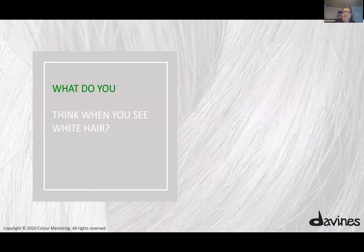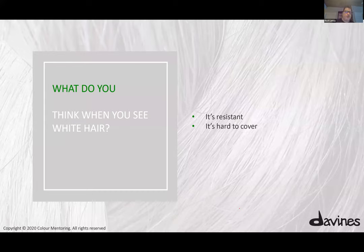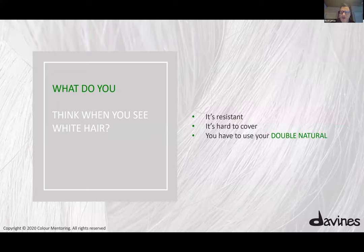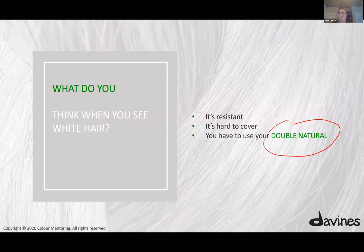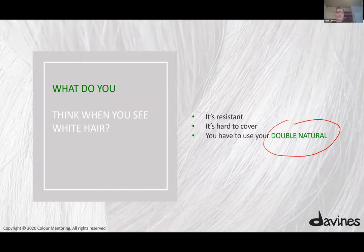The choice of product depends on the connection you're doing with your client to see what she's looking for. What do you think of when you think of white hair? Most hairdressers immediately think: it's resistant, it's hard to cover, and the go-to is double natural. This is often the security blanket because they want to make sure the formula gives white hair coverage. But double natural is not my go-to at all. I use double natural when I want a natural end result — as a covered target base. Mixing it into a fashion tone means the weight of that series is much heavier, which alters the color result.